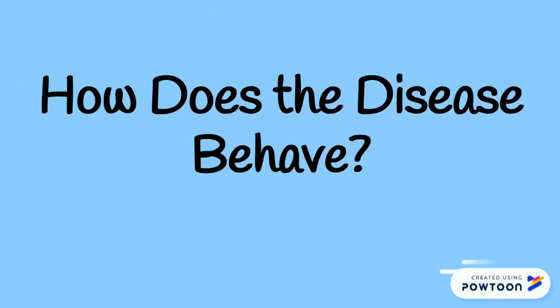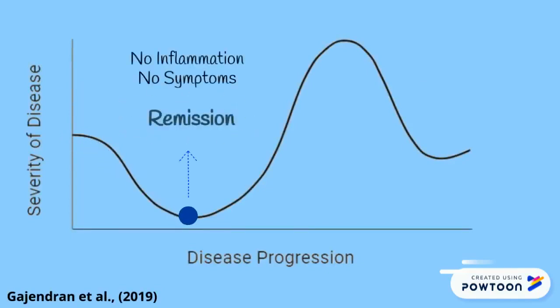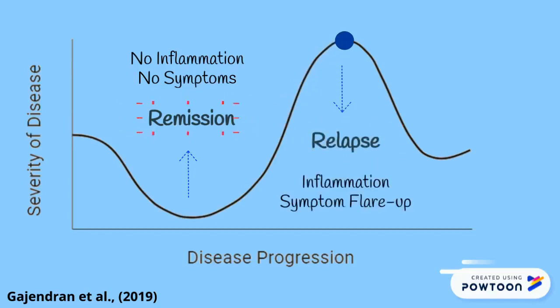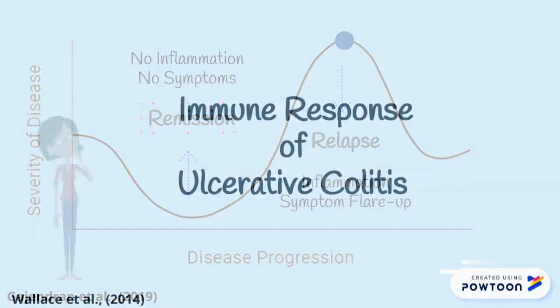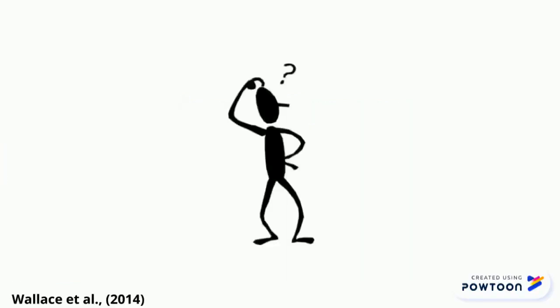Unfortunately, the course of ulcerative colitis is unpredictable. The disease is identified by periods of remission and relapse. Individuals undergo periods of no inflammation, experiencing no symptoms, or periods of inflammation, experiencing flare-ups. As of now, the cause of ulcerative colitis is not fully understood, which makes it tricky to pinpoint the origin of the disease.